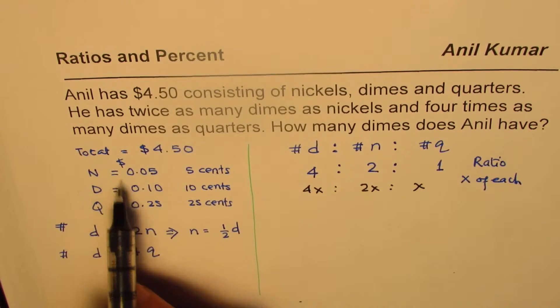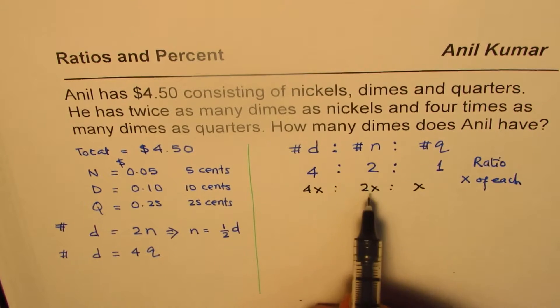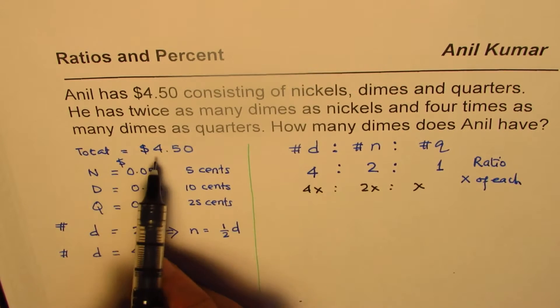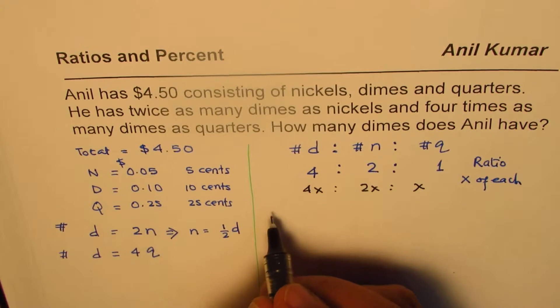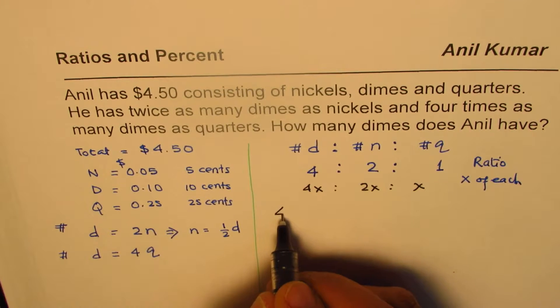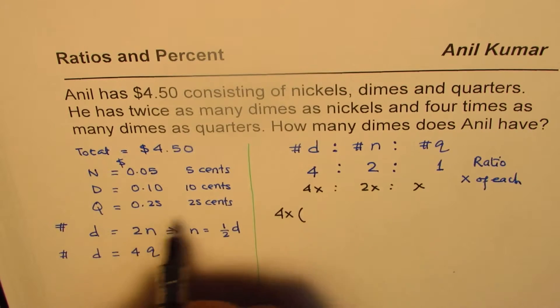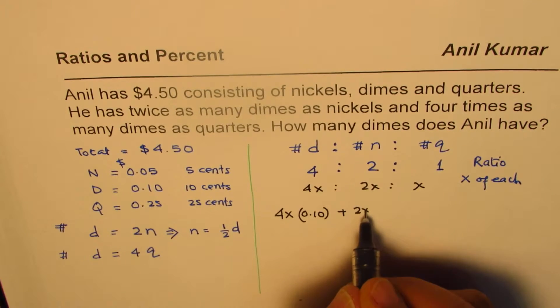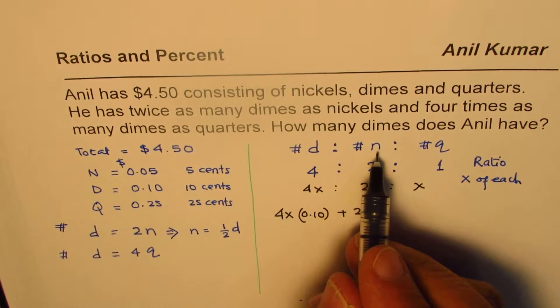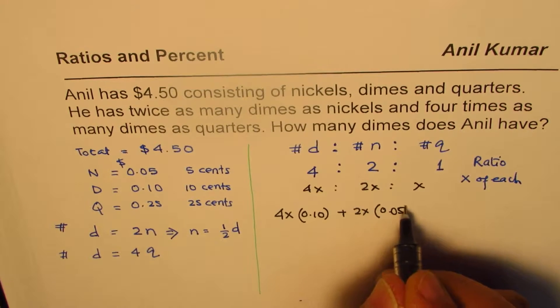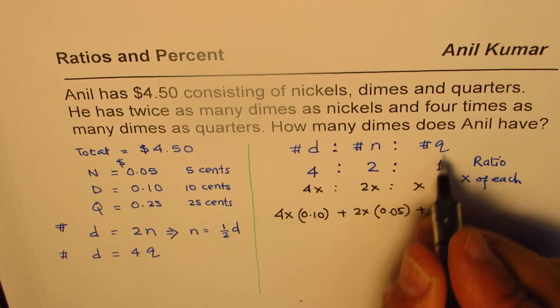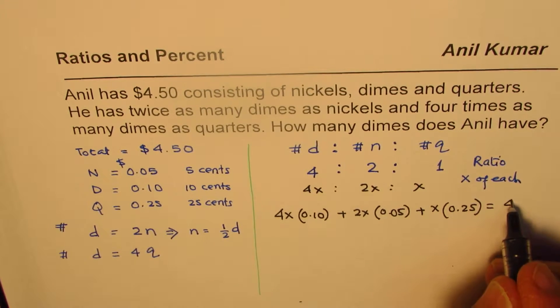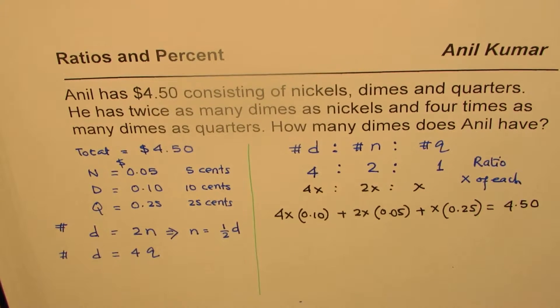And we know that value of a dime is 10 cents, value of a nickel is 5 cents, and the value of a quarter is 25 cents. Total value is $4.50. So we can write here that 4x times dimes is 10 cents, 0.10, plus 2x times the value of nickel, which is 0.05, plus x times 0.25 should be equals to 4.50. So that gives us one equation.